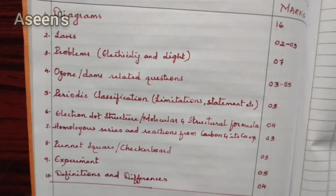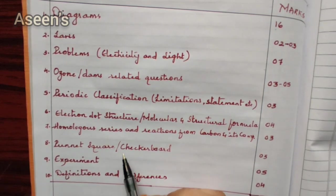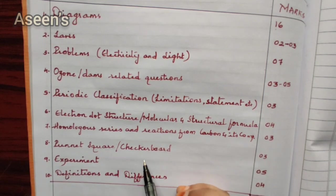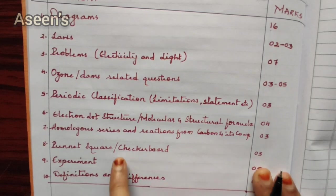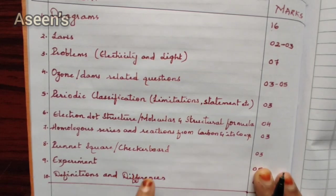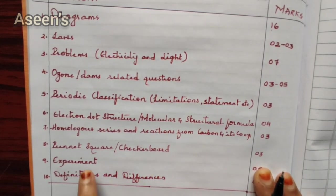Next comes the Punnett square, also called the checkerboard, from the chapter Heredity and Evolution. Definitely three marks will be given for Punnett square or checkerboard questions.